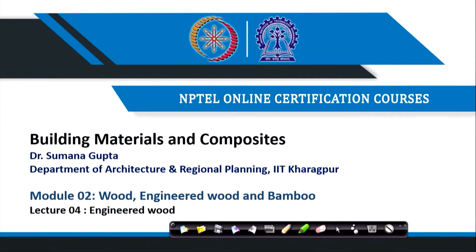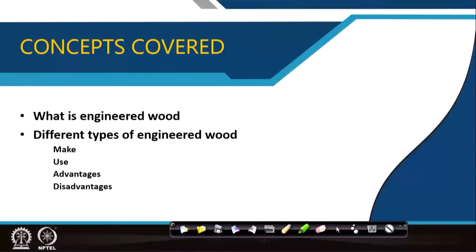Welcome everyone for lecture 4 of module 2, which is on engineered wood. As I closed my previous lecture, wood is a very important building material used since many years, but people have not stopped researching on how to use wood in better ways and even use the wastes or remnants from the wood industry. We will have a discussion on what is engineered wood, the different types, making of it, using it, advantages and disadvantages.